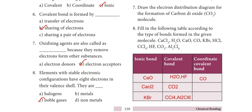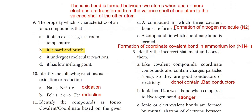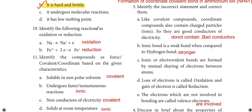Eighth question: fill in the table according to the type of bonds formed. Ionic bonds: CaO, CaCl2, KBr. Covalent bonds: H2O, HF, CO2, CCl4. Coordinate covalent bond: Al2Cl6, CO. Fill in accordingly.